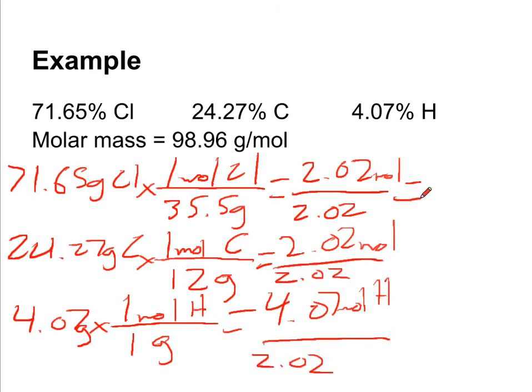These two, it's going to be equal to 1 for chlorine and carbon. And this is going to be equal to 1.99, or we'll just round it up to 2 for hydrogen. So right now, the formula we think we have is CClH₂.